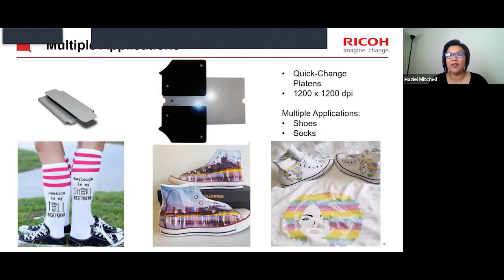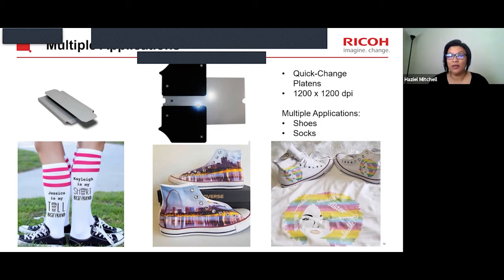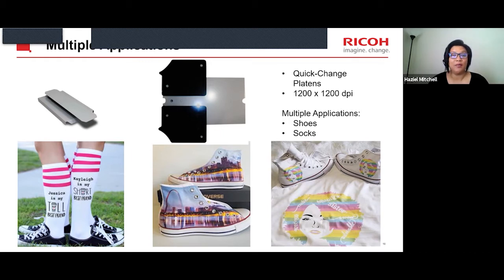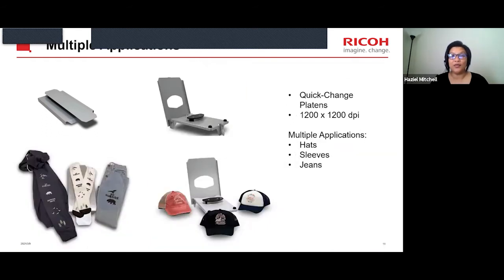On the shoe platen — shoes are a huge markup. That print costs anywhere between about $1 for an adult shoe and literally pennies — less than 50 cents — for a kid's shoe. A lot of our customers who are printing on shoes are having customers bring their own shoes and just charging for the print, anywhere between $50 to $80. That's just for the print — which is a huge markup. The market for shoes and hats is massive.